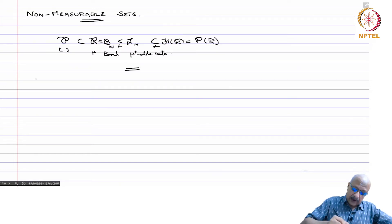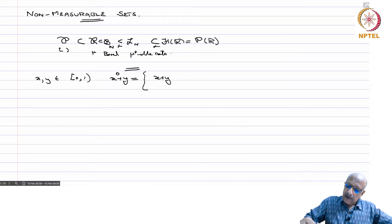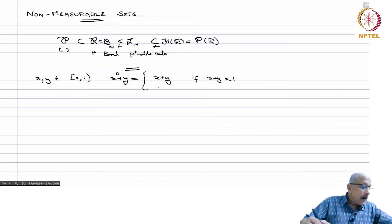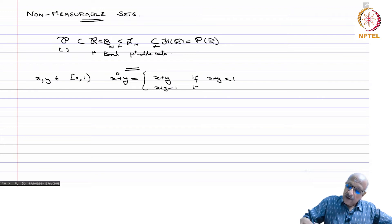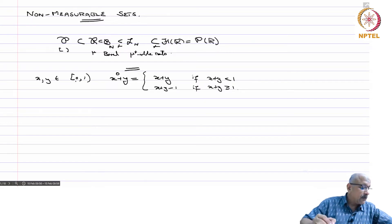So let us take x and y in [0,1) and define x plus y modulo 1. This is addition modulo 1: it equals x+y if x+y is less than 1, and x+y-1 if x+y is greater than or equal to 1, so that the answer comes back into the semi-closed interval [0,1).